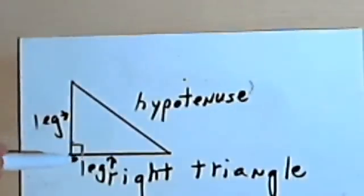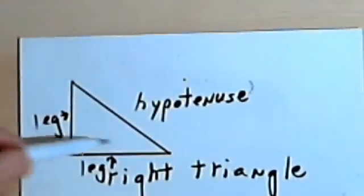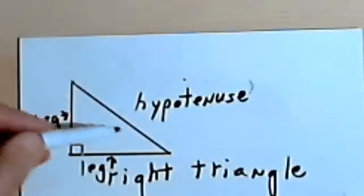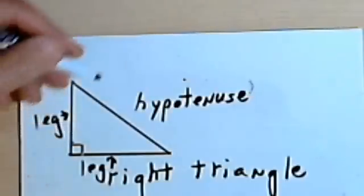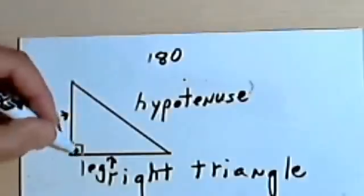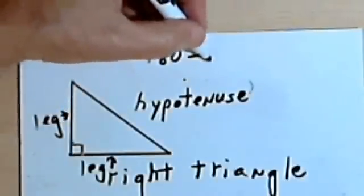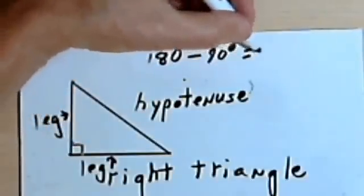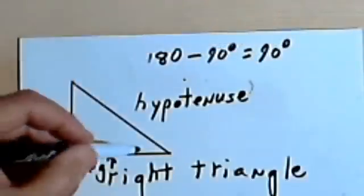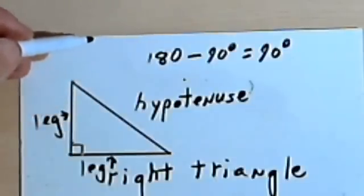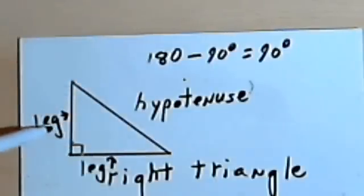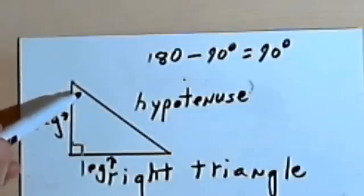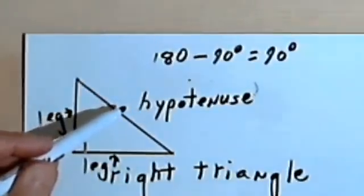So a right triangle has a 90-degree angle. The other two angles — since the total for a triangle is 180 degrees, if one angle is 90 degrees, the right angle — then the other two added together have to add up to 90 degrees. The sides next to the right angle are called legs, and the long side, the side opposite the right angle, is called the hypotenuse.